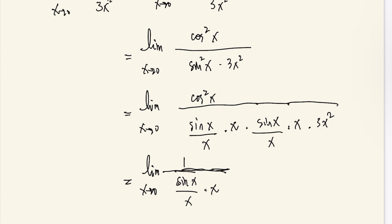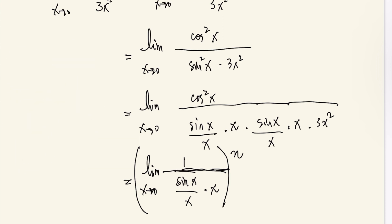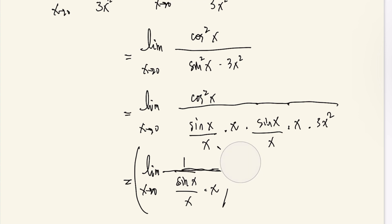Using the limit of the nth power theorem, the limit of (sine x over x) squared as x approaches 0 equals the square of the limit of sine x over x as x approaches 0, which is 1 squared equals 1. This leaves us with the limit of cosine squared x all over 3x squared as x approaches 0.